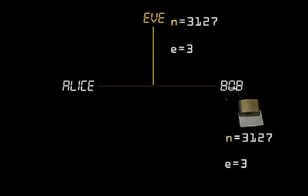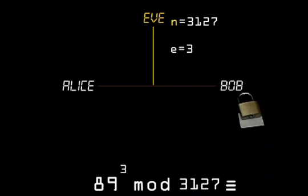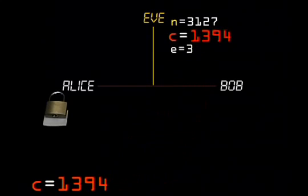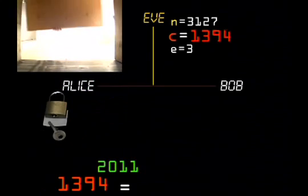Bob locks his message by calculating m to the power of e mod n. Call this C, his encrypted message, which he sends back to Alice. Finally, Alice decrypts his message using her private key, d, accessed through her trap door. C to the power of d mod n equals Bob's original message m.